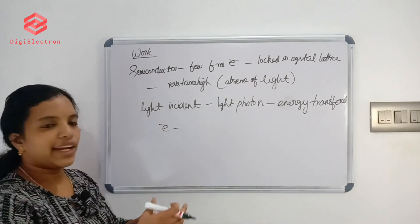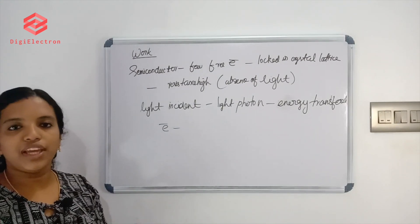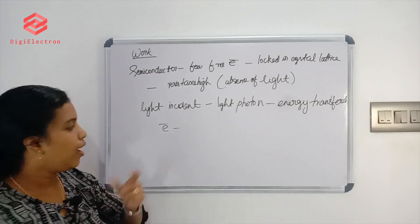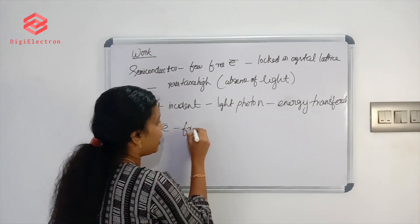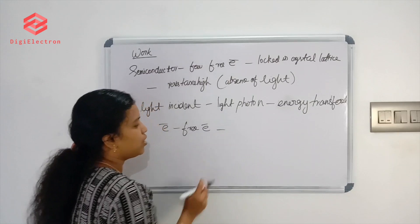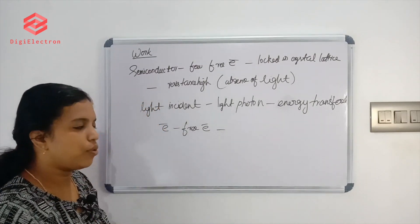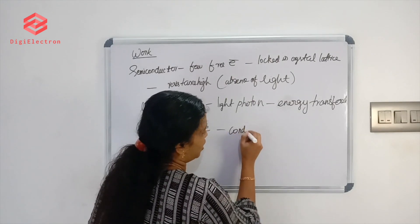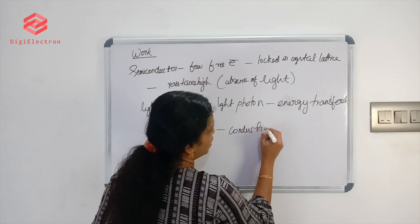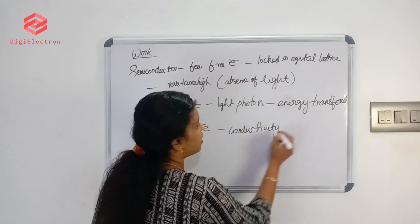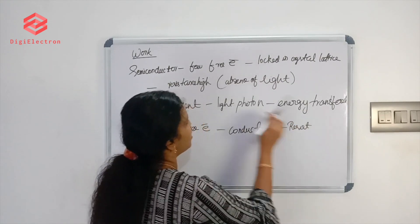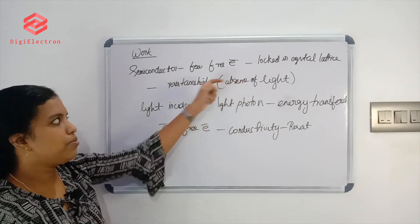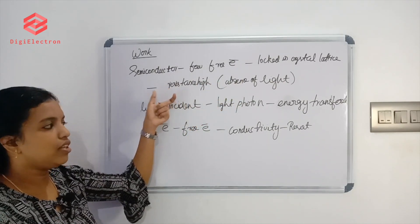When light is incident, photons break free electrons from the local crystal lattice area. These free electrons transfer energy and move through the semiconductor, enabling conductivity. Without light, resistance is high.